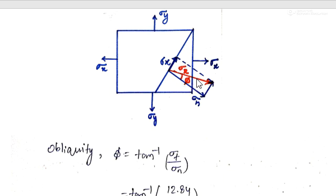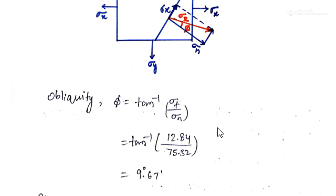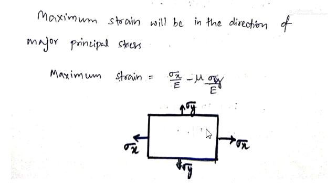The obliquity is the angle made by the resultant with the normal to the oblique plane, denoted as φ. From the stress triangle, tan(φ) = σt / σn, so φ = tan⁻¹(σt / σn). With σt = 12.84 and σn = 75.32, simplifying gives the obliquity φ = 9 degrees 67 minutes.